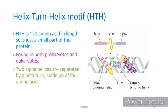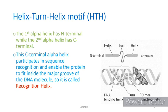The beta turn is made up of four amino acids. The first alpha helix has an N-terminus while the second alpha helix has a C-terminus. The C-terminal alpha helix participates in sequence recognition and enables the protein to fit inside the major groove of the DNA molecule, so it is called the recognition helix.